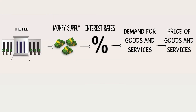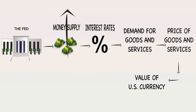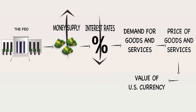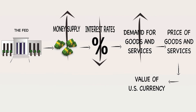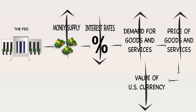To recap: the Fed controls the growth of the economy by increasing or decreasing the money supply. This in turn influences interest rates and other factors, which affects aggregate demand for goods and services, leading to either inflation or deflation. During a recession, for instance, the Fed might pump money into the economy to combat negative effects like spikes in unemployment. However, pumping all that money into the economy will negatively affect the value of US currency.